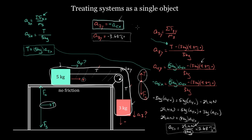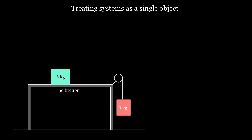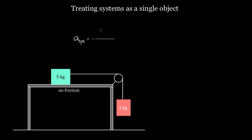The trick is sometimes called just treating systems as a single object. If you ever have a system where multiple objects are required to move with the exact same magnitude of acceleration — because maybe they're tied together by a rope, or maybe they're pushing on each other — you can simply find the acceleration of that system as if it were a single object, using Newton's second law: all of the external forces on our system divided by the total mass of our system.